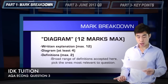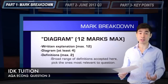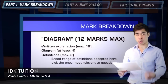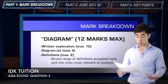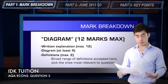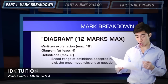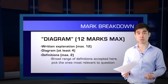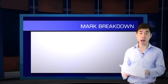So two marks on offer for definitions. And then finally, 12 marks on offer for your written explanation. You can pick up 12 marks for your written explanation alone, but if you've already picked up four marks for your diagram and two marks for your definitions, then you only need to pick up six marks from your written explanation — which makes life a lot easier.